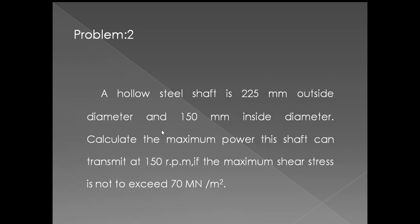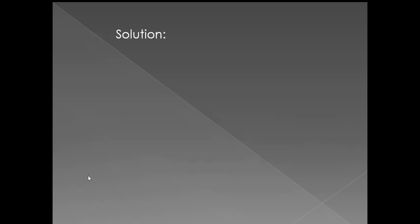Problem 2: A hollow steel shaft has 225 mm outside diameter and 150 mm inside diameter. Calculate the maximum power this shaft can transmit at 150 RPM if the maximum shear stress is not to exceed 70 MN/m². Here d_O = 225 mm, d_I = 150 mm, speed = 150 RPM, and shear stress = 70 N/mm². We first find the torque, then substitute into the power formula — the reverse of Problem 1.